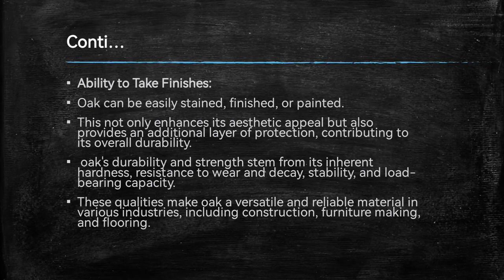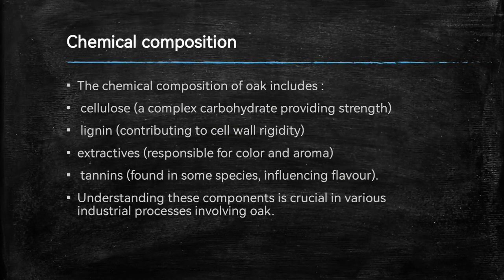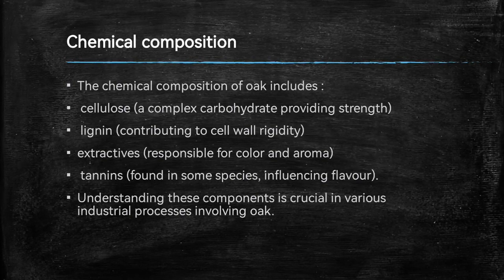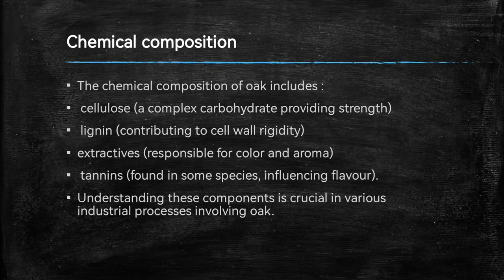Next, what is the chemical composition of oak? The chemical composition of oak includes: cellulose, which is a complex carbohydrate providing strength; lignin, contributing to cell wall rigidity; extractives, responsible for color and aroma; and tannins, found in some species and influencing flavors. Understanding these components is crucial in various industrial processes involving oak.